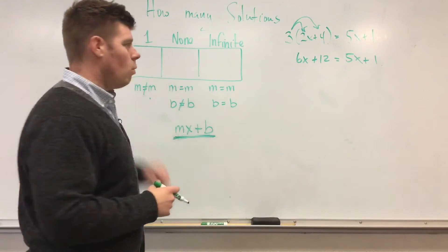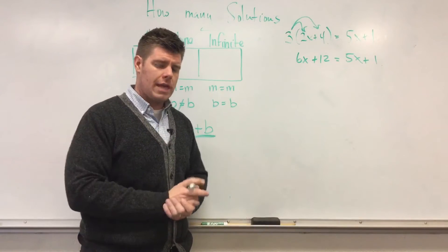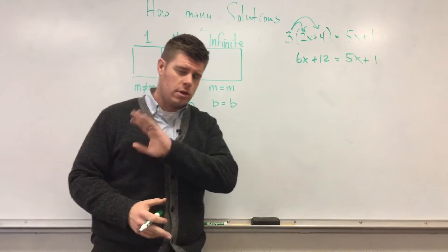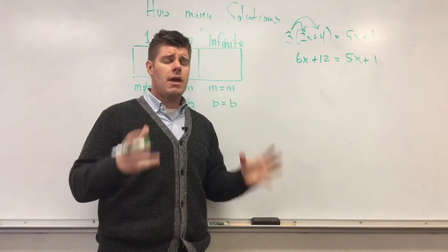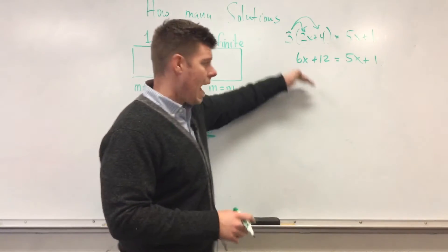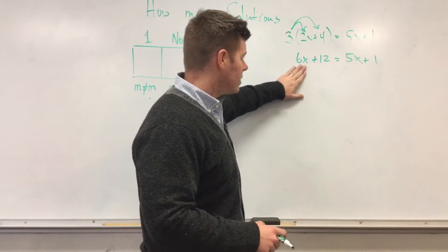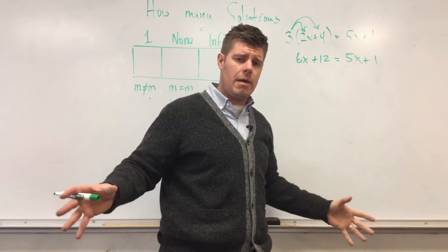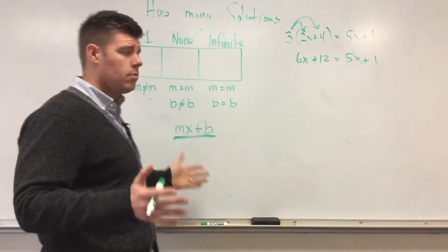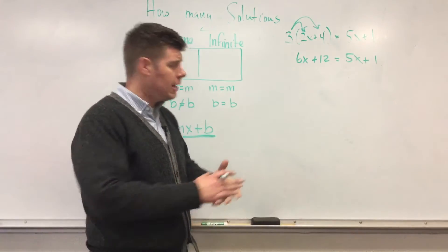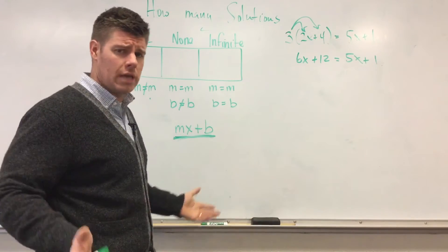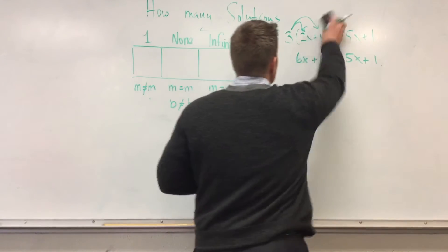With this example, I'm now done predicting. There is going to be one solution. This video is only about determining how many solutions there will be — one, none, or infinite — because those are the only three options. Notice how I knew: there are six X's on the left and five X's on the right. They are not the same, so the answer is automatically one solution.